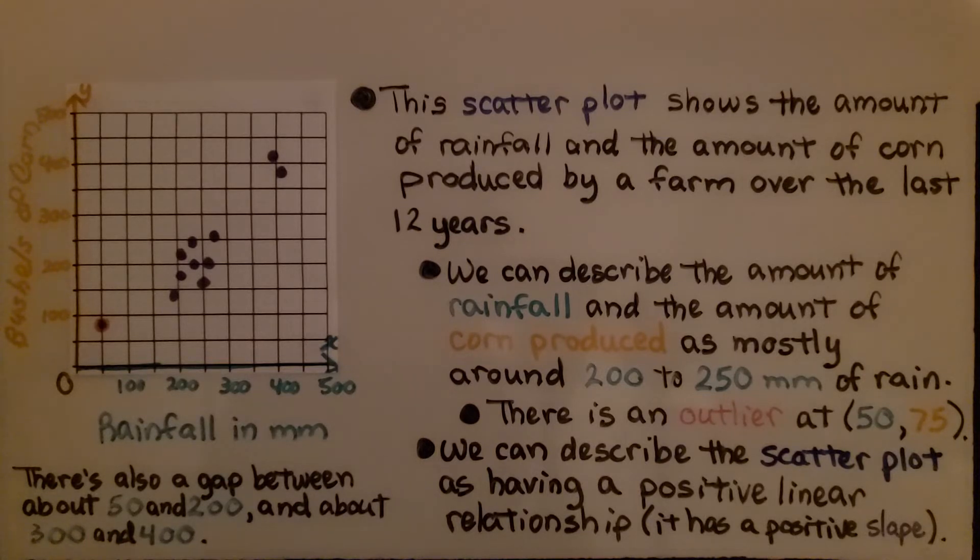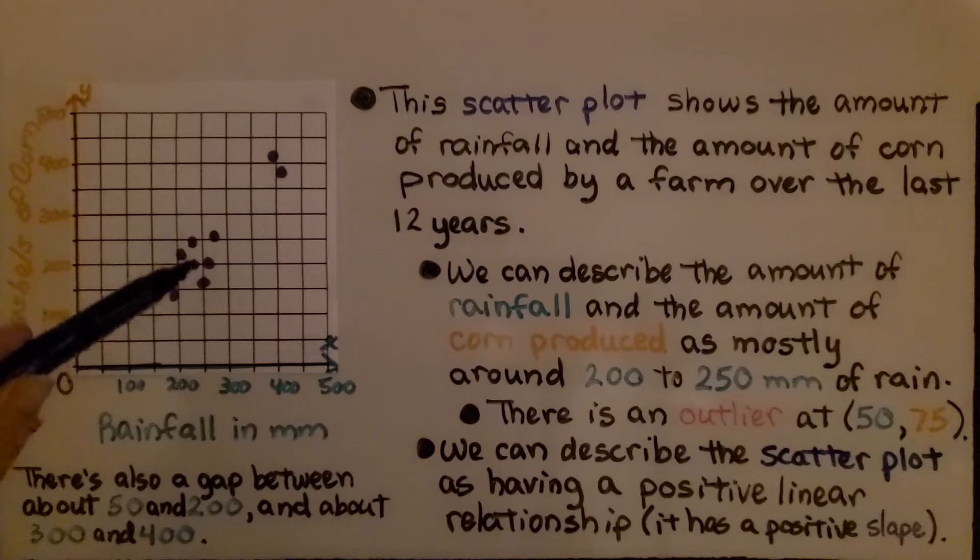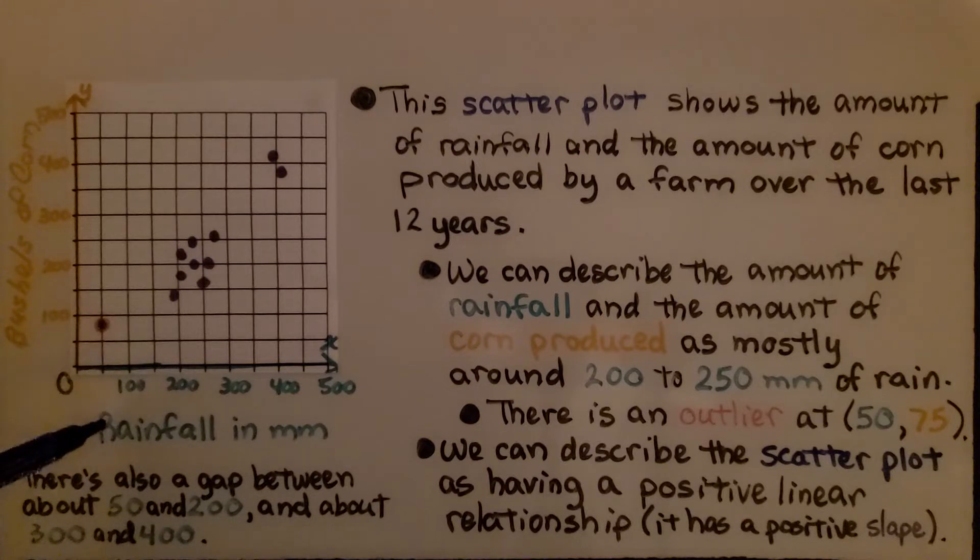We can describe the amount of rainfall and the amount of corn produced as mostly around 200 to 250 millimeters of rain. There is an outlier at 50 for x, 75 for y, so that would be 50 millimeters of rain, and they got 75 bushels of corn.